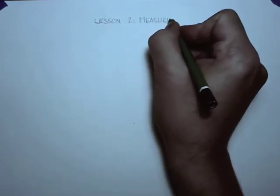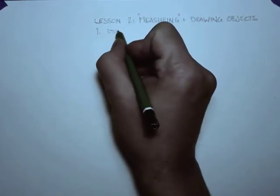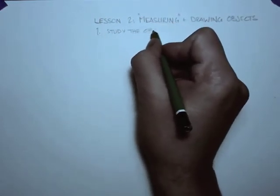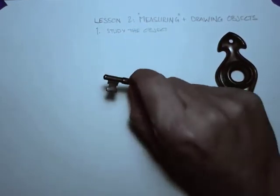Lesson two of engineering design drawing by hand. In this lesson we're going to look at measuring and drawing objects using the underlying geometry of those objects to make the task of drawing them easier.